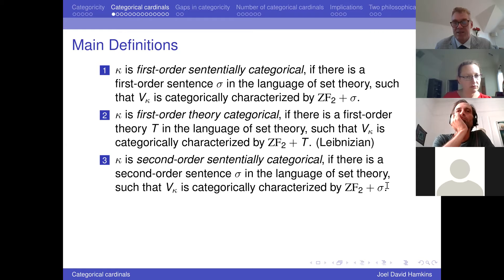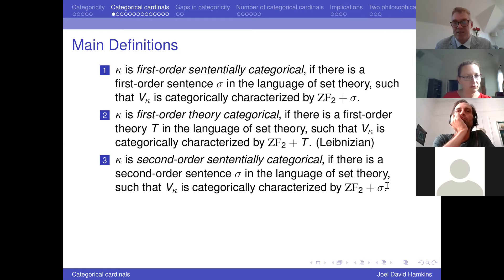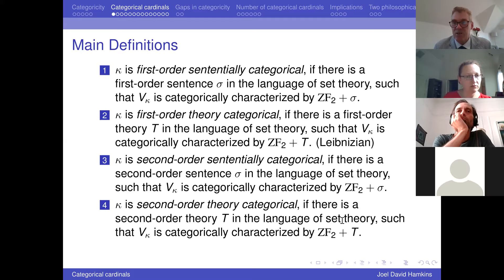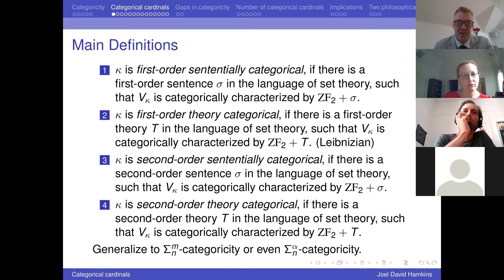Then we have the second-order version: second-order sententially categorical means adding a second-order sentence, and second-order theory categorical means adding a second-order theory. There's a whole fine stratification — we can talk about sigma-m-n categoricity or sigma-alpha-n for transfinite levels, so not only second-order but third-order, fourth-order, alpha-order for any alpha.